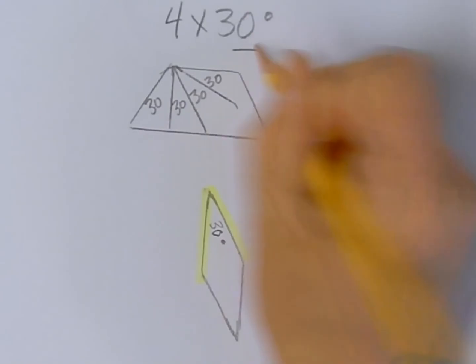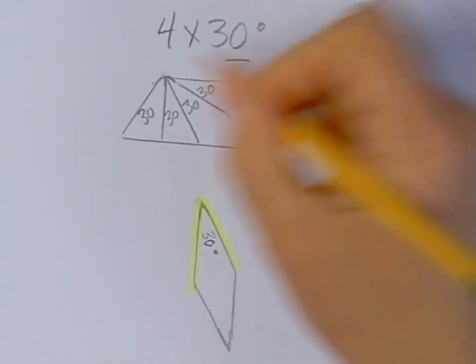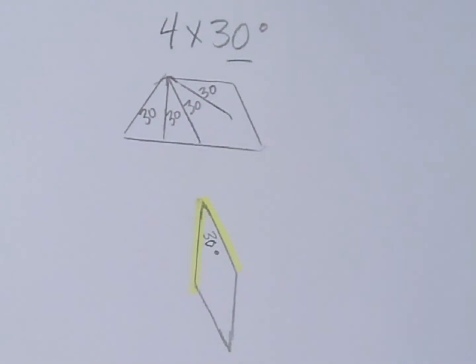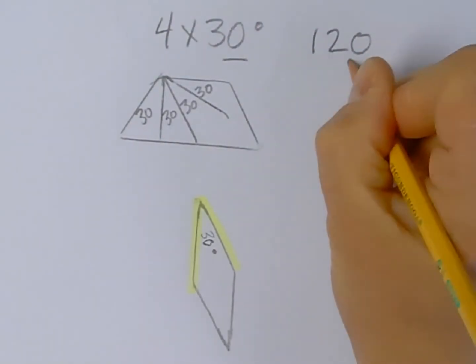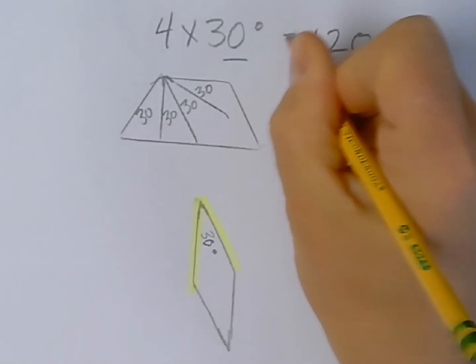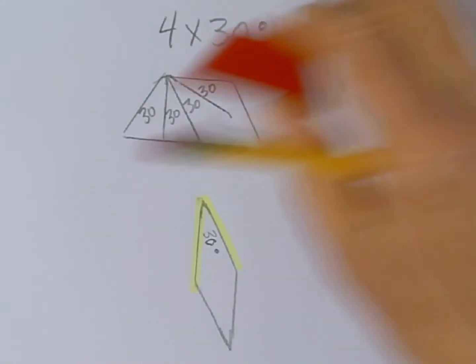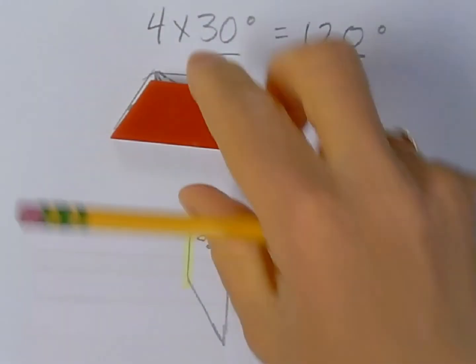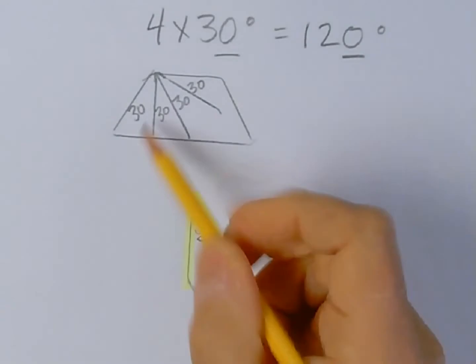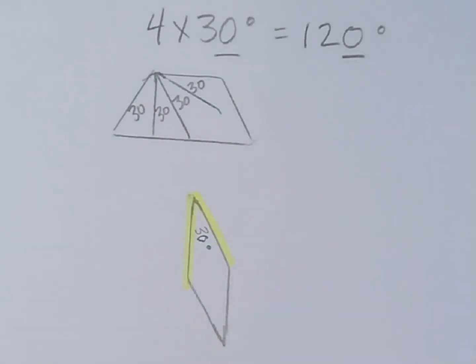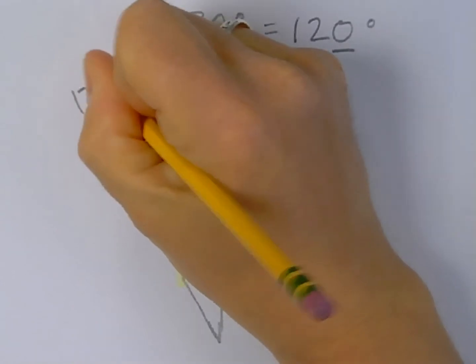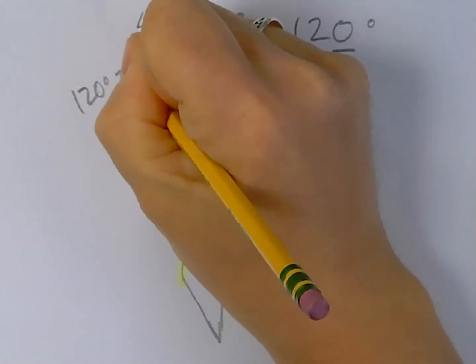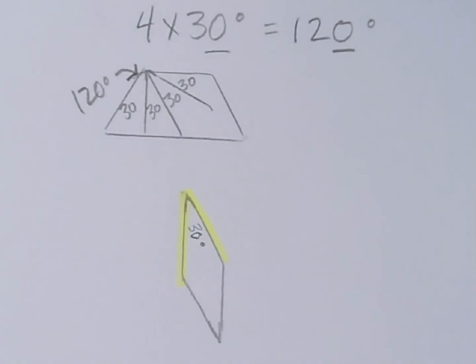And what's four times 30, everyone? Well, that would be four times three tens, otherwise known as 12 tens, also known as 120 degrees. So when they say that one obtuse angle in this trapezoid is four times the measure of the acute angle of this rhombus, we're saying that this angle is 120 degrees.